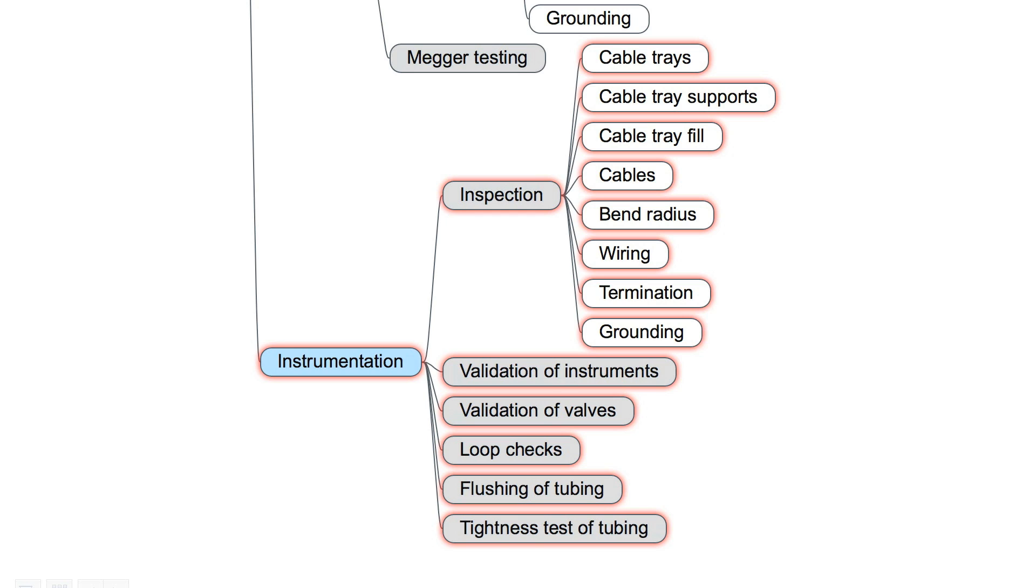Instrumentation. Inspections are similar to the electrical inspections: cable trays, cable tray supports, cable tray fill, cables, bend radius, wiring, termination and grounding. And additionally we have to validate instruments, validate the valves, loop checks have to be done, flushing of tubing, tightness test of tubing.